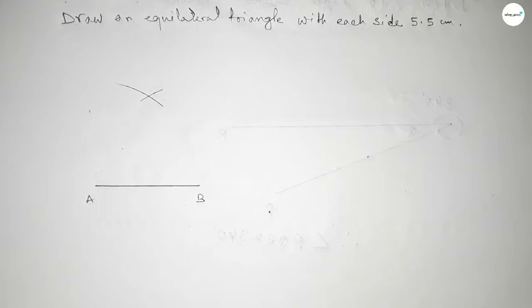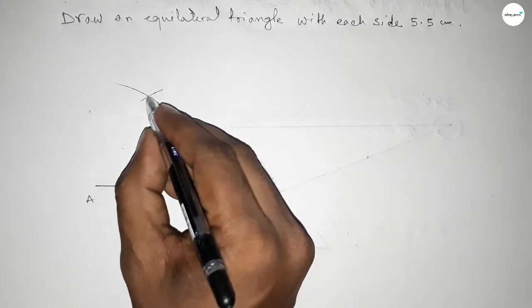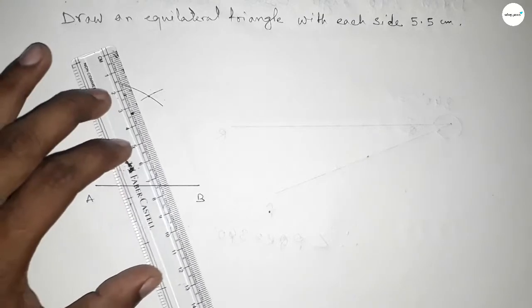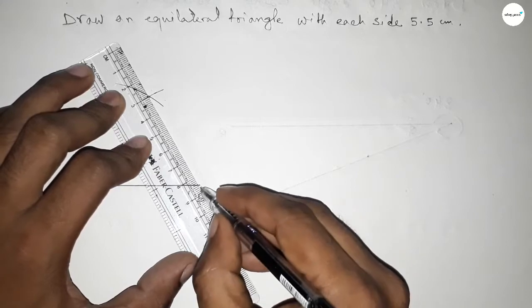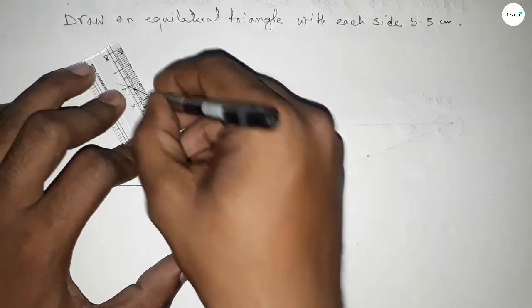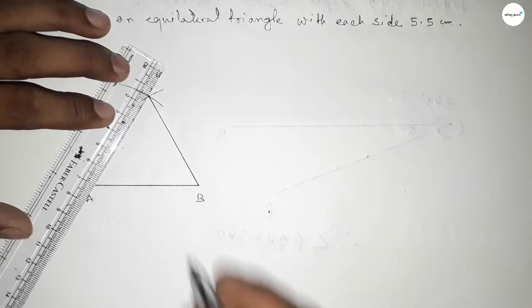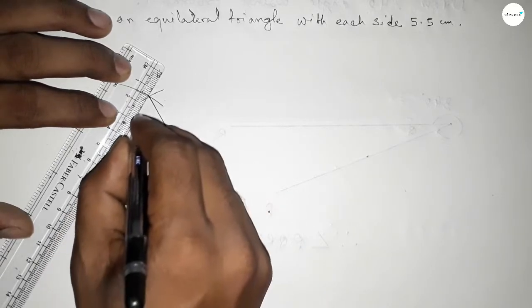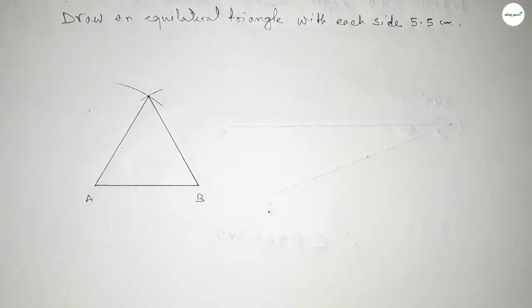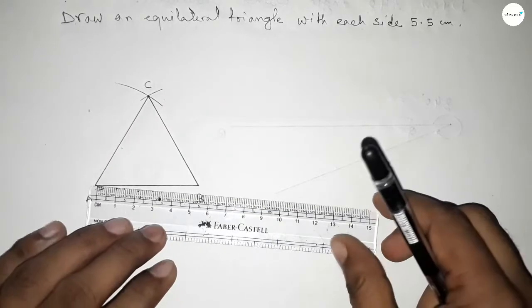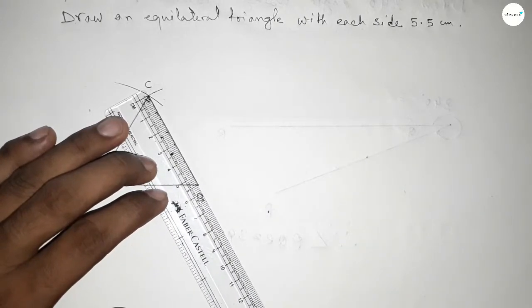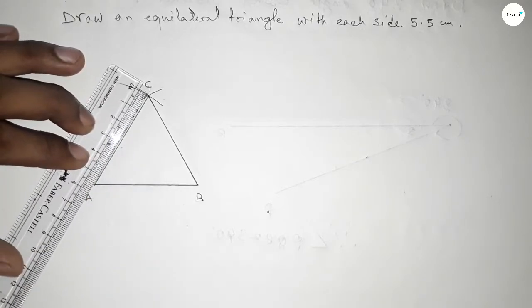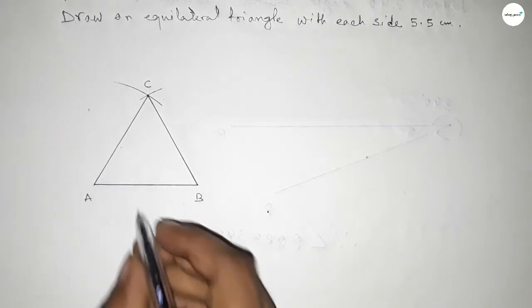Putting the compass here and cutting here, so both curves intersect at a point. Now joining this side and joining this side to get an equilateral triangle with each side 5.5 centimeters. This is point C. Now checking all sides: this is 5.5 centimeters, this is also 5.5 centimeters, and this is also 5.5 centimeters.